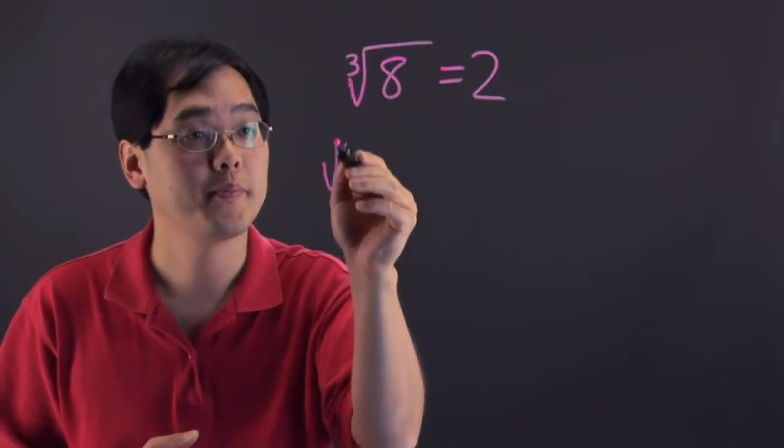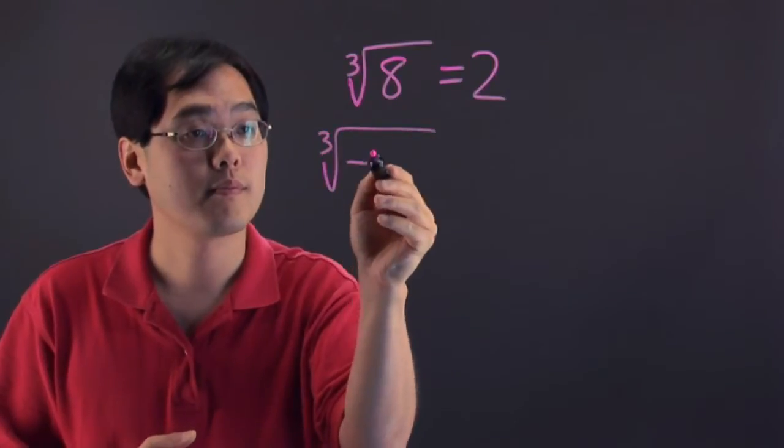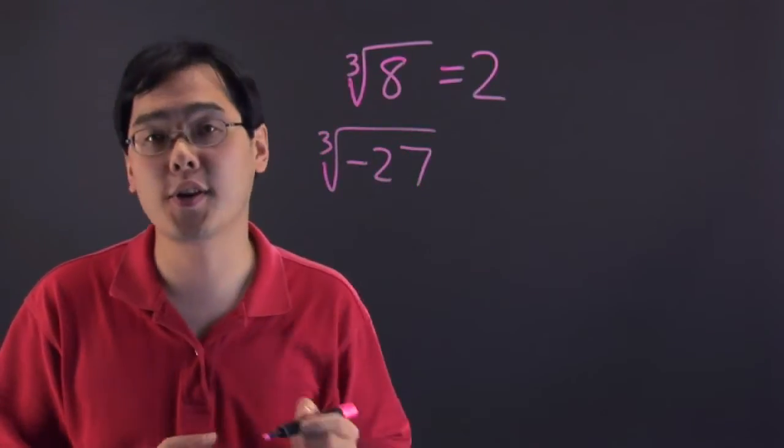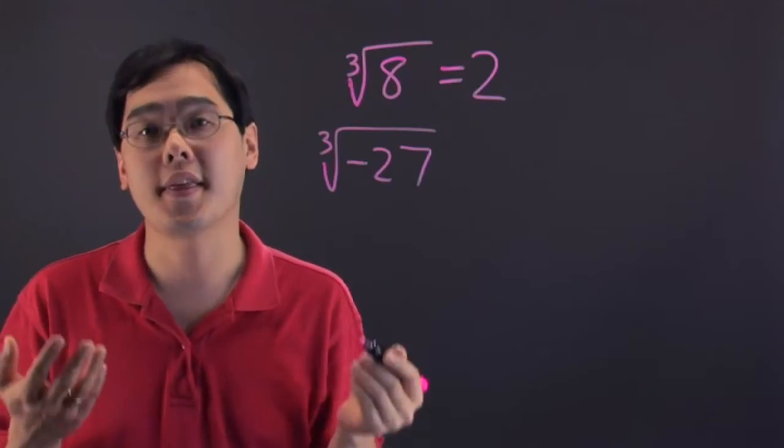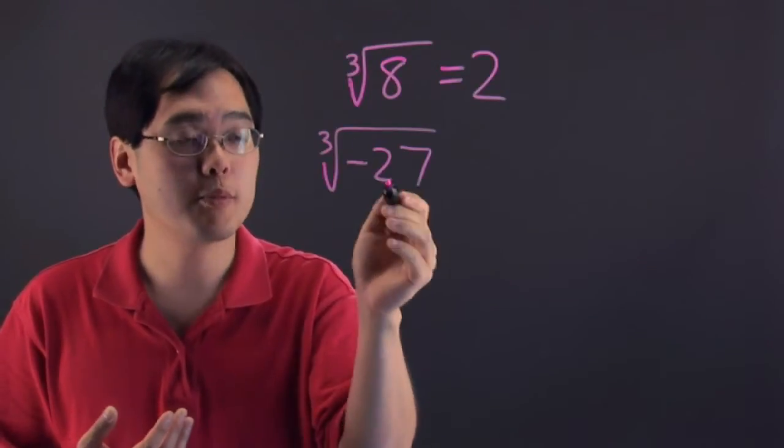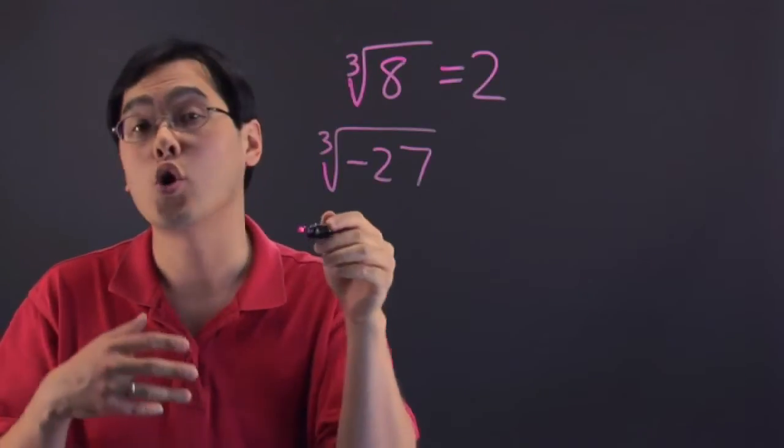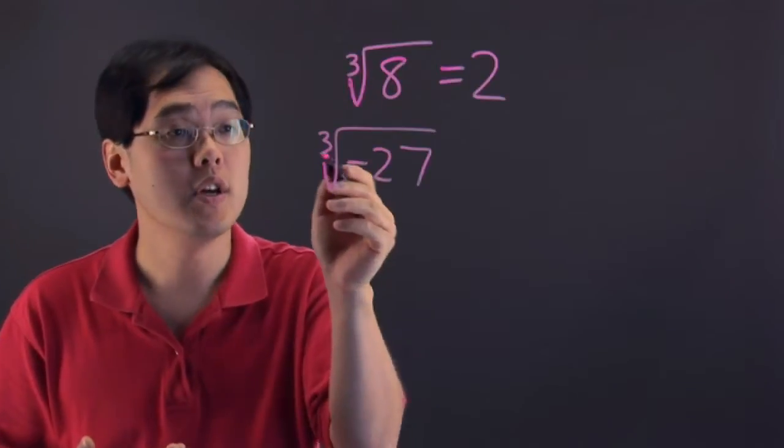Here's another illustration. Suppose you want to find out the cube root of negative 27. You've got to think about what number multiplied by itself or raised to the 3rd power is going to give you negative 27.